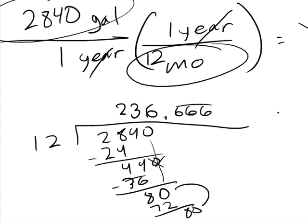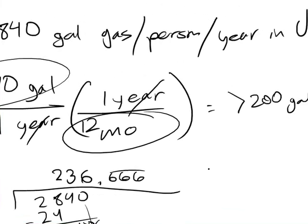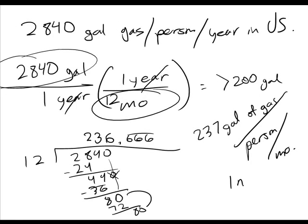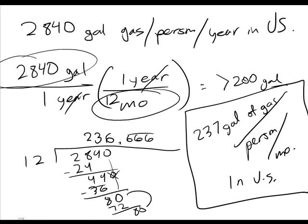So you could have said, per month, 237 gallons of gas per person per month in the US. Alright, thanks for tuning in. Don't worry about ratios next time. See ya.